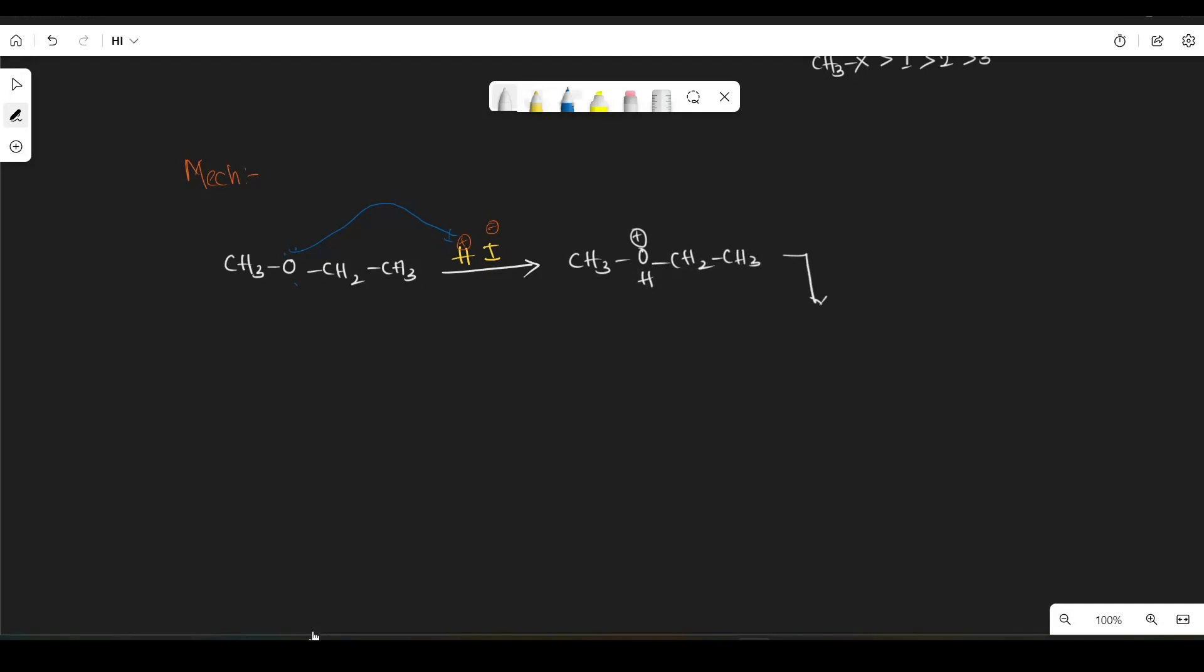So after that, this I-, I- will attack on the less hindered side according to SN2. Then we will get CH3I plus CH3-CH2-OH. So I hope up to here its clear.